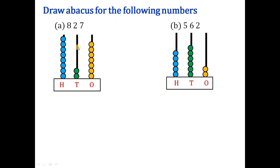Next: represent the following number on an abacus. The number given is 827. The abacus shows three places: ones, tens, and hundreds. In the ones place it is 7, so we draw seven balls: one, two, three, four, five, six, seven. In the tens place it is 2, so we draw two balls.